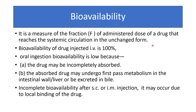What is bioavailability? It is a measure of the fraction of the administered dose of the drug that reaches the systemic circulation in unchanged form. The bioavailability of intravenous injection is 100% because the drug reaches circulation directly. Oral bioavailability is low because the drug may be incompletely absorbed, or the absorbed drug may undergo first-pass metabolism in the intestinal wall or liver, or be excreted in bile. Incomplete bioavailability after subcutaneous or intramuscular injection may occur due to local binding of the drug.